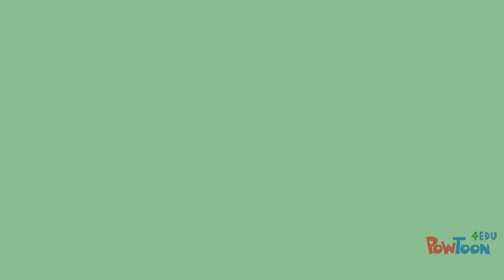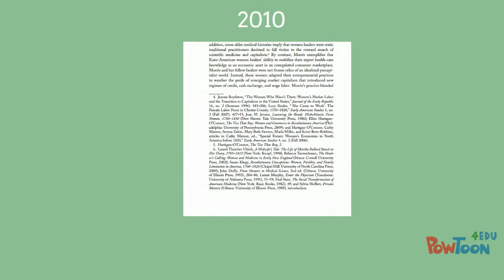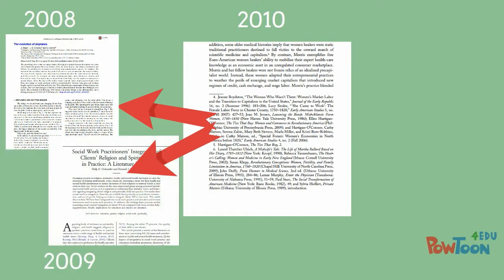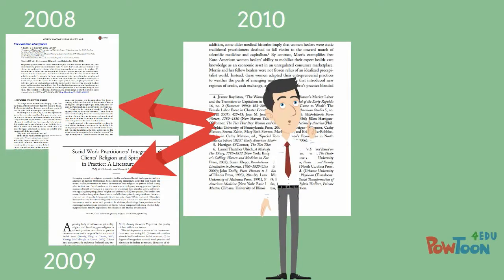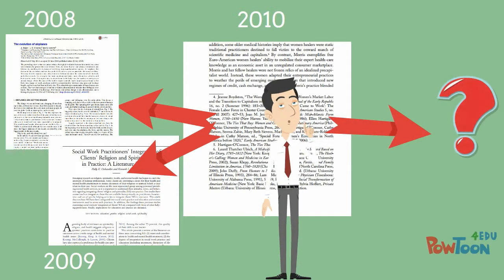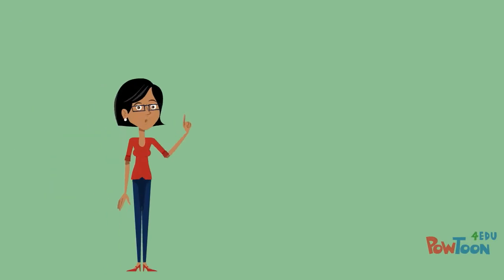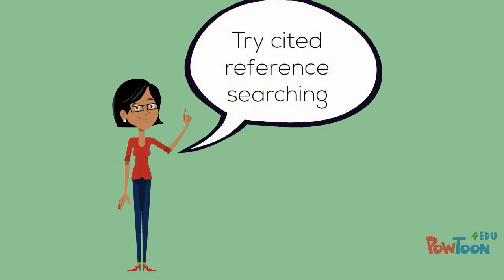By looking at the references for his article, Will was able to find previously published research. But he also wanted to find research that had been published since his original article was published. For this, the librarian explained how he could search for articles that cited his article as a reference.